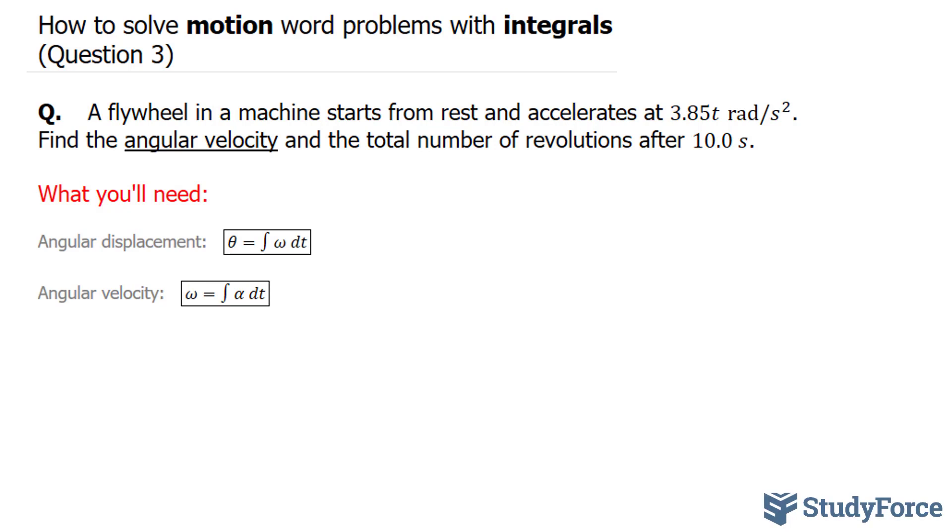Once I find my angular velocity, I'll set omega equal to 0 and t equal to 0 because we're starting from rest, and this will enable me to find my constant. Let's do step one first, and I'll show you what I mean next.